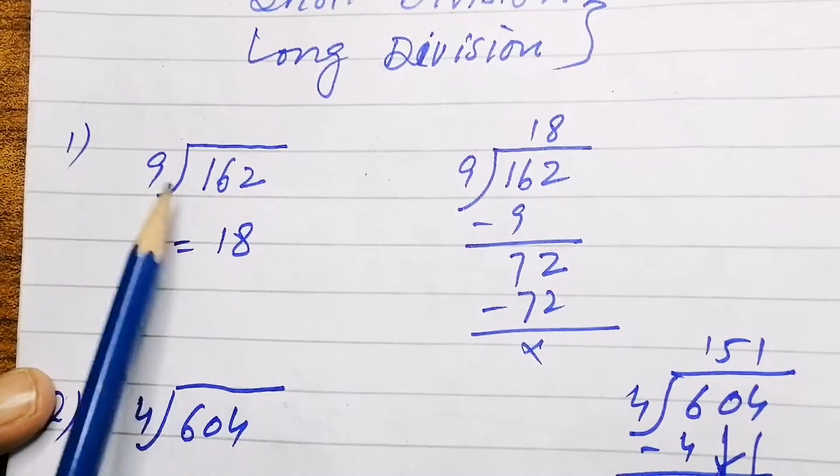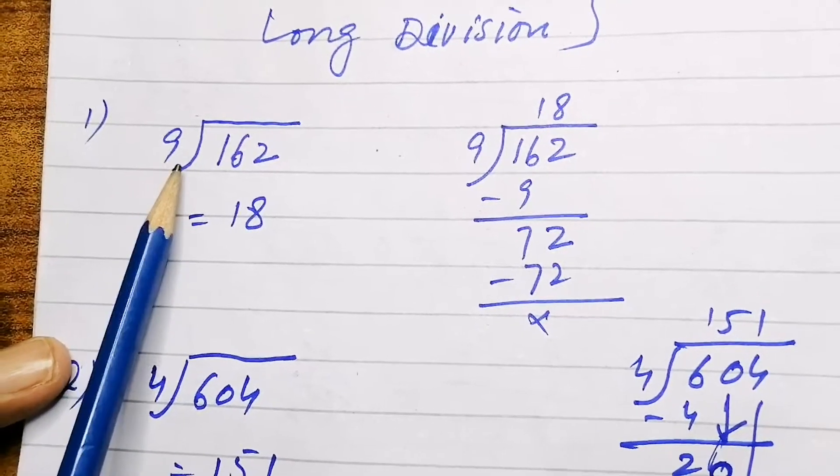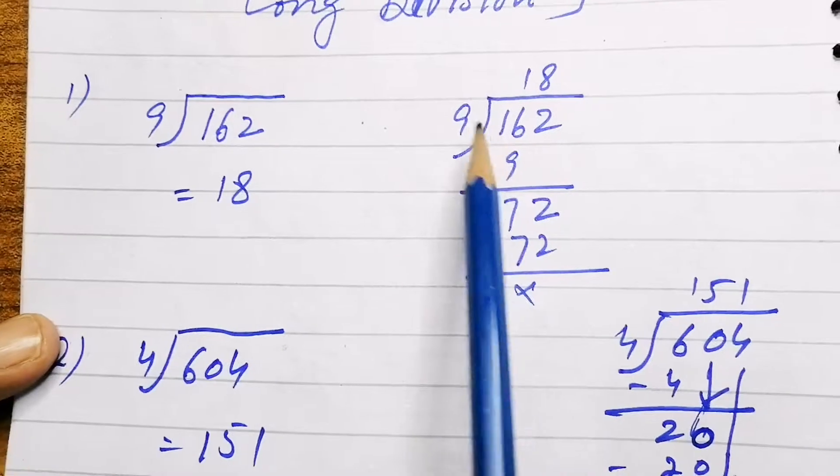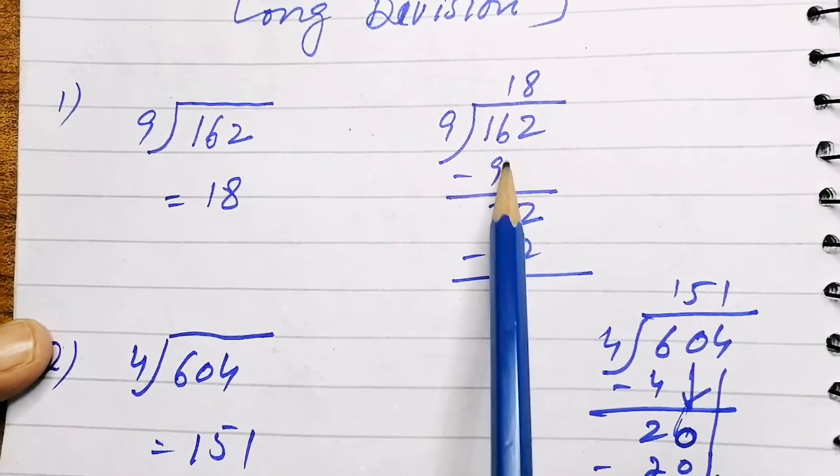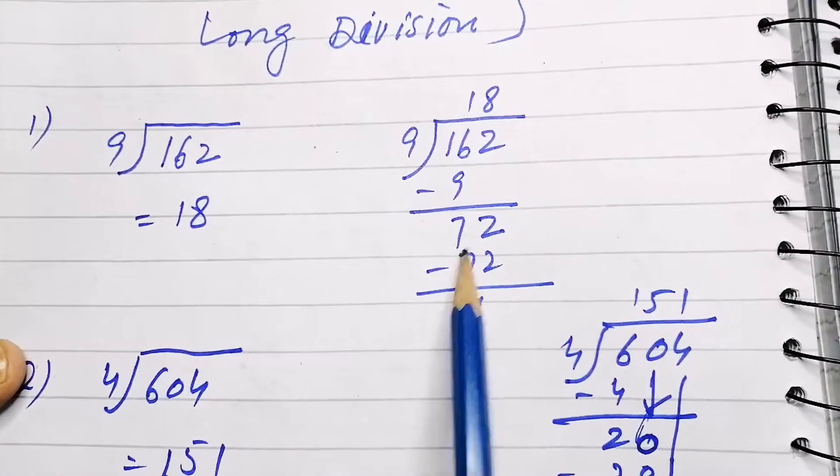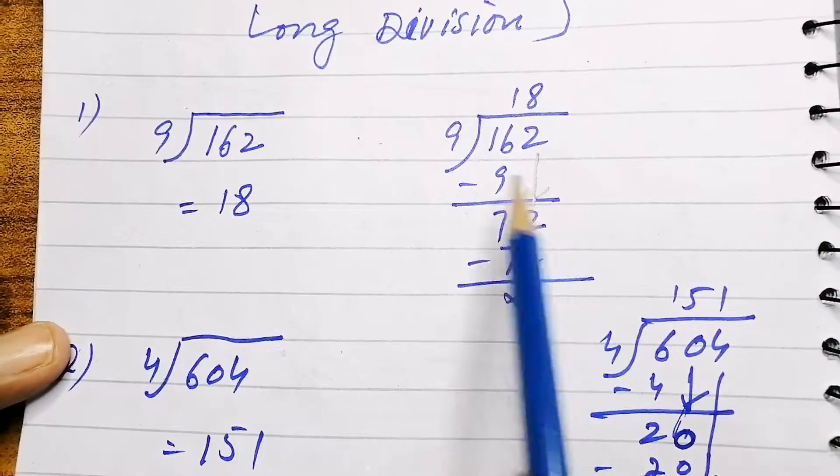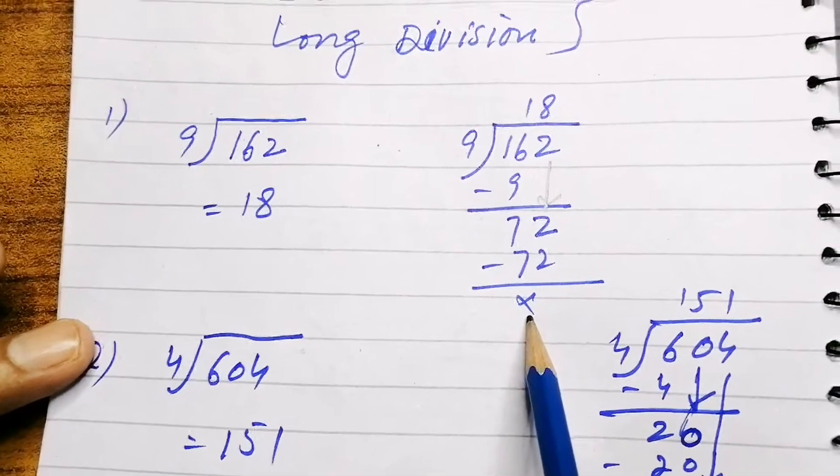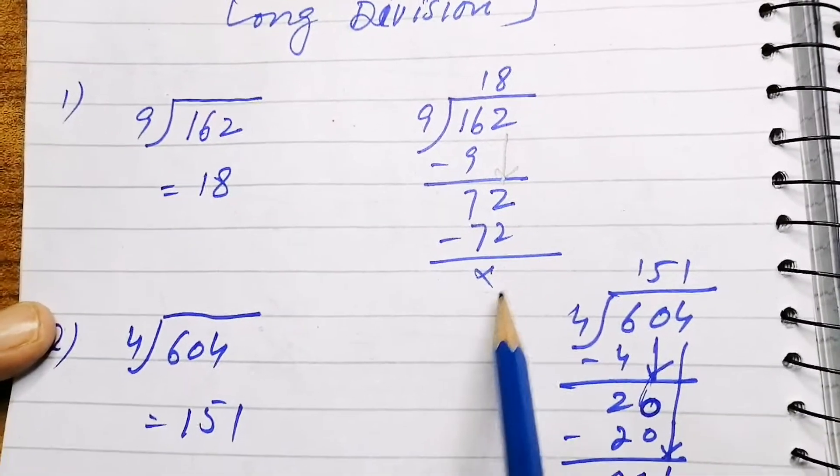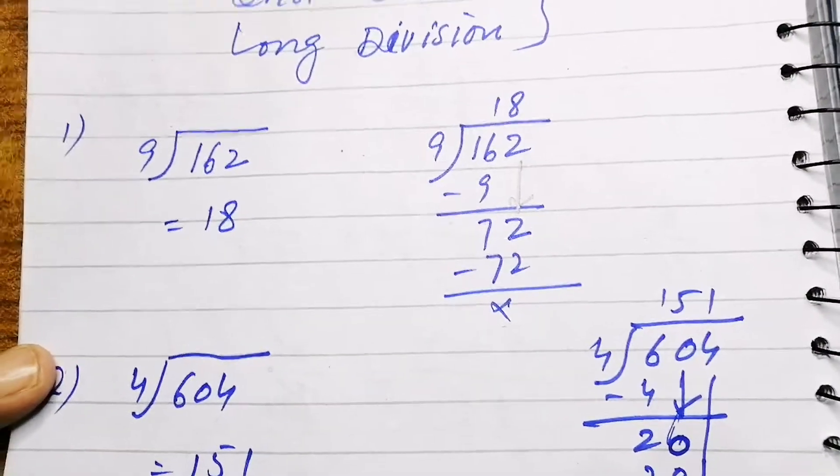These are numbers given: 162 and 9. 9 divided by 162. We divide: 9 1s are 9, 16 minus 9 is 7, and we bring 2 down here. Then 9 8s are 72. For this you must know the tables.